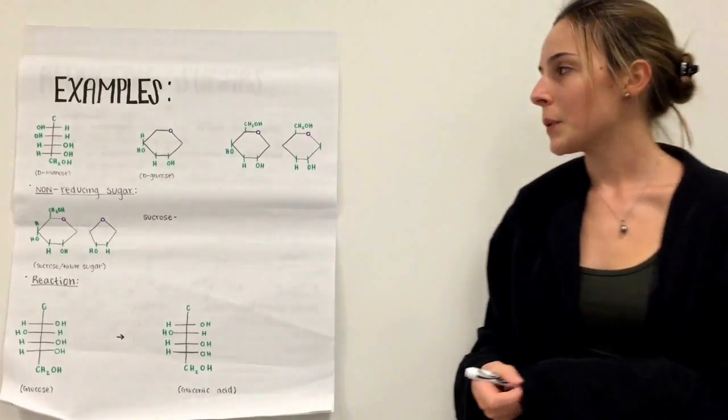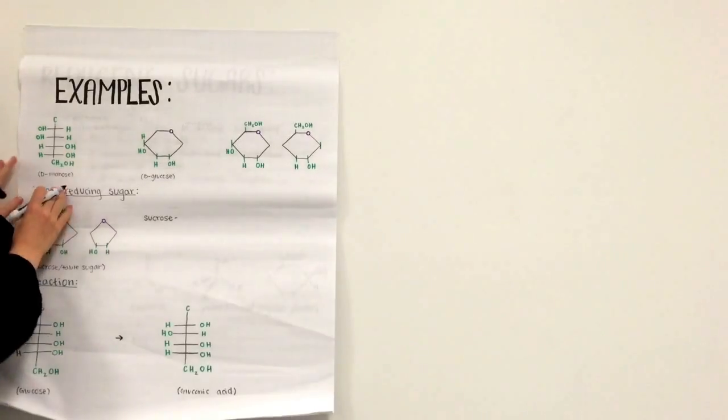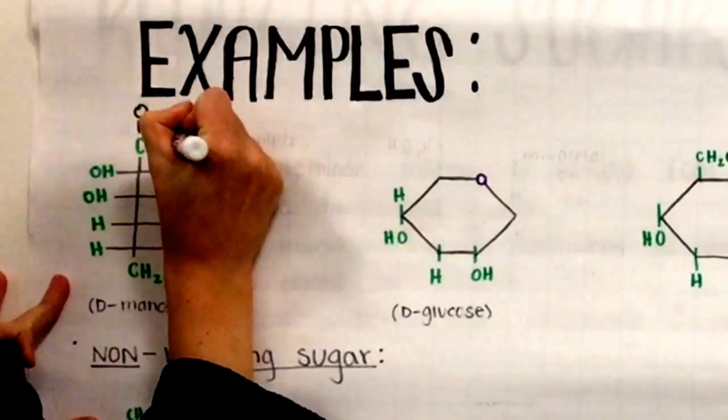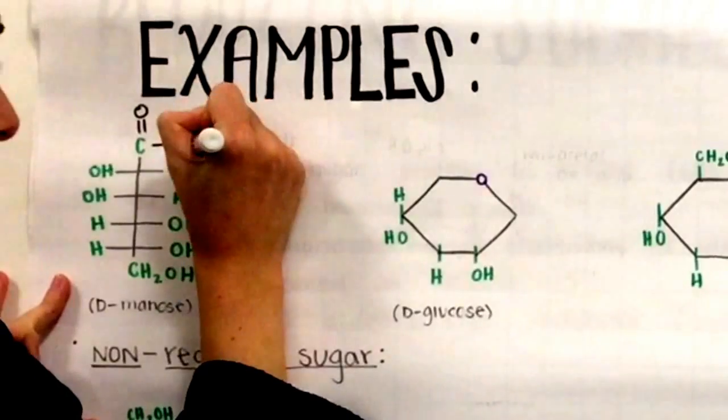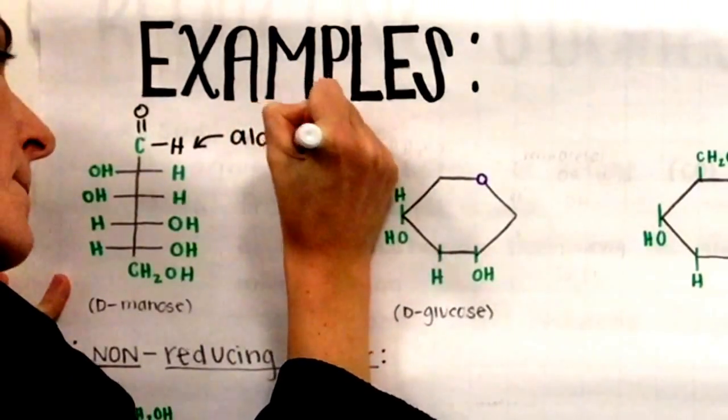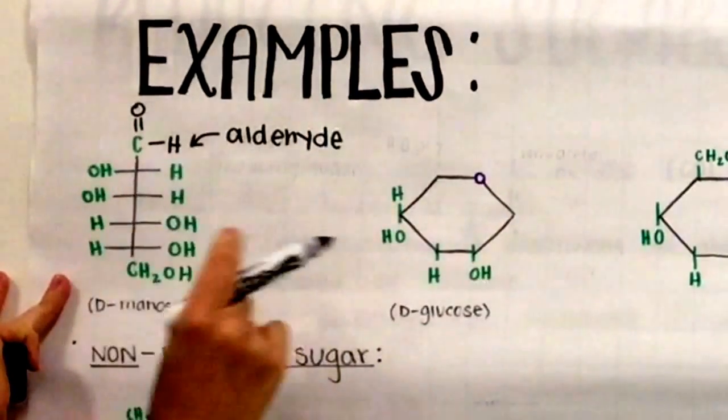Here are some examples of a reducing sugar. Right here I have D-mannose. Carbon is double bonded to an oxygen and a hydrogen. This is an aldehyde. An aldehyde is a reducing sugar.